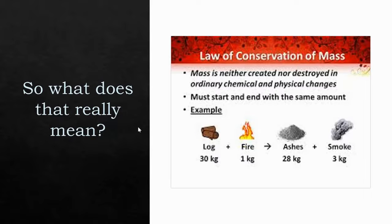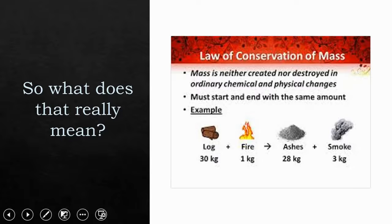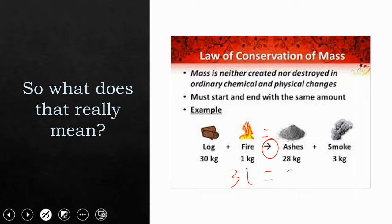Here's an example: 30 kilograms of log plus 1 kilogram of fire equals 31. That arrow means yields or equals. And we get 28 grams of ashes plus 3 grams of smoke, which is also 31. So 31 equals 31. That is what the law of conservation of mass means — what I begin with is what I end with.